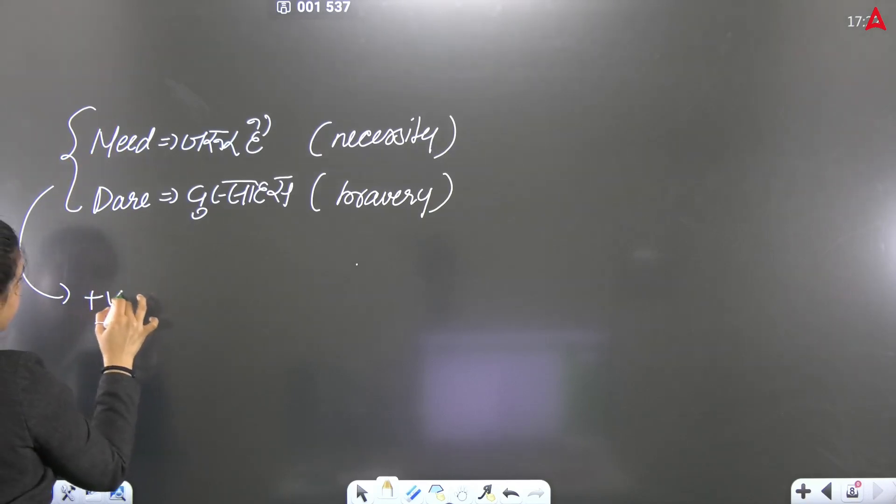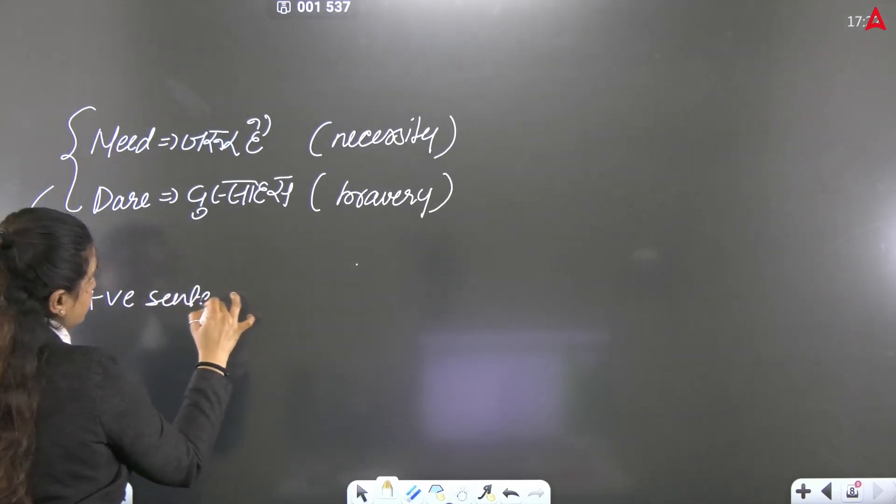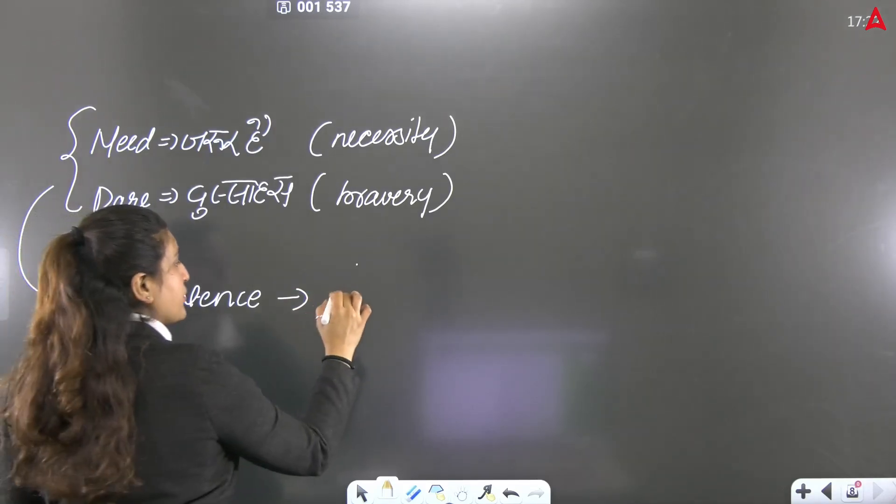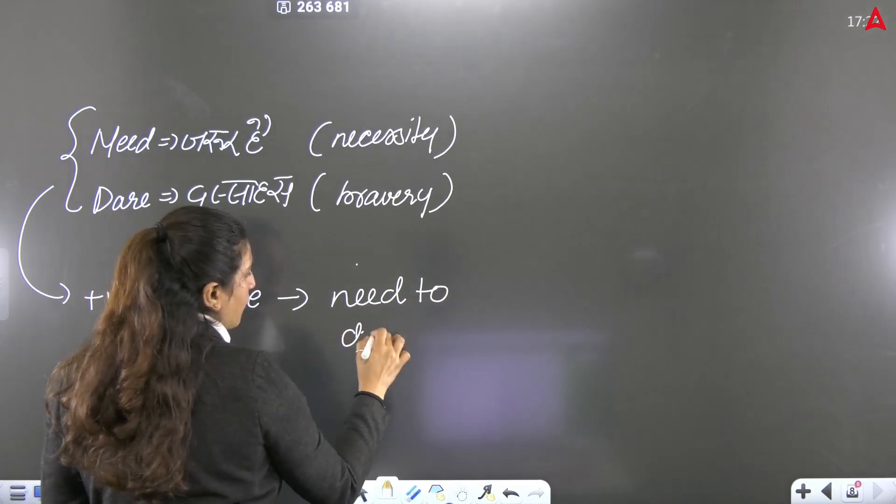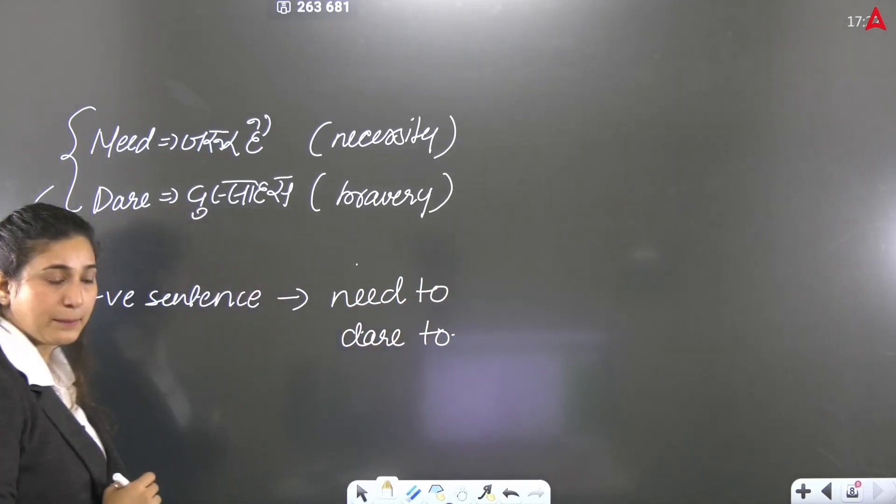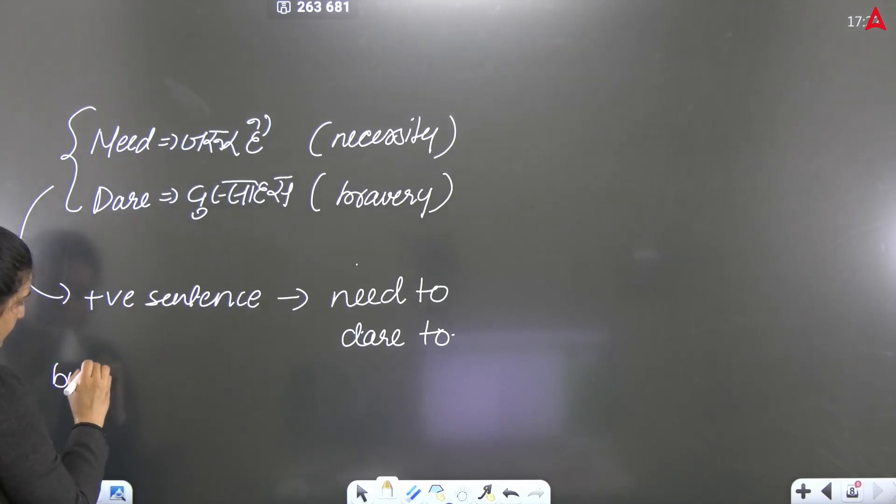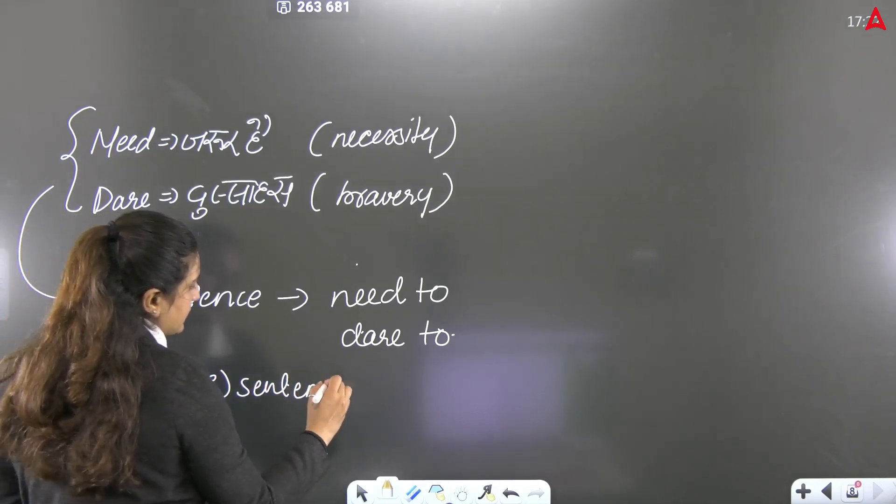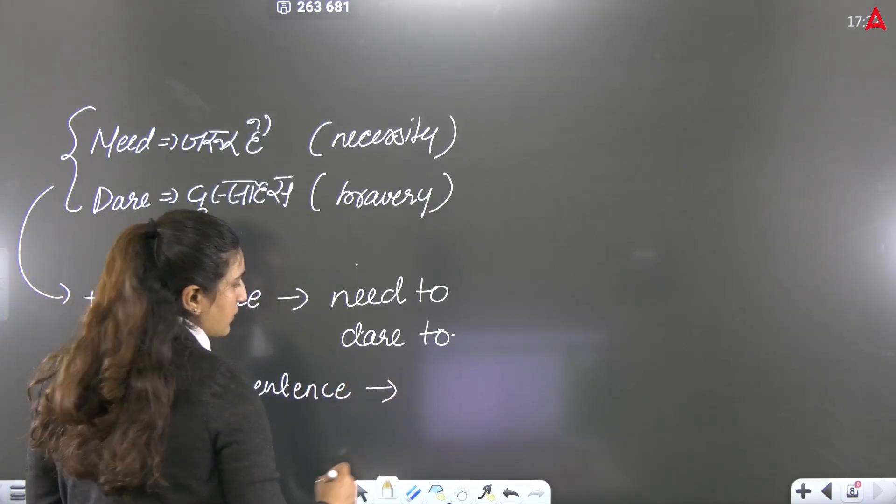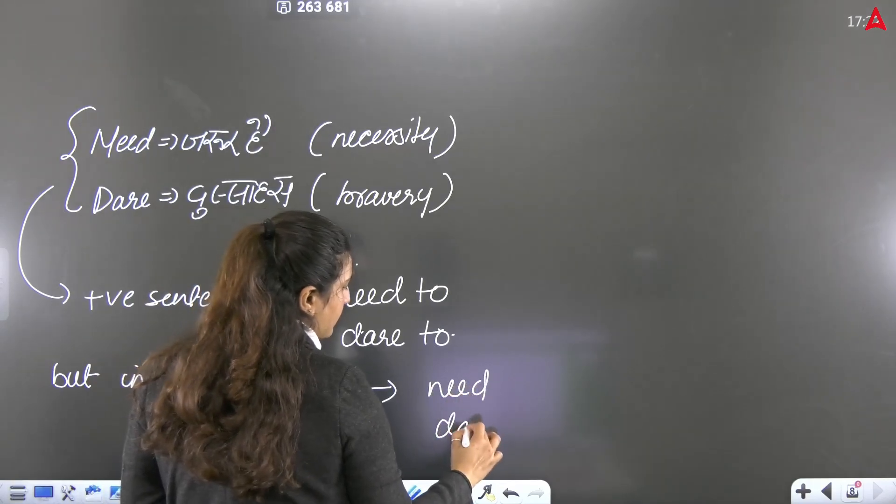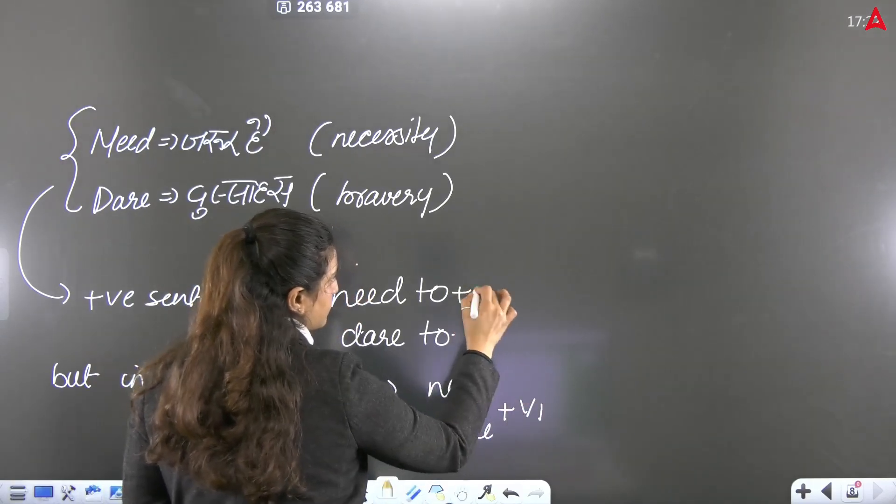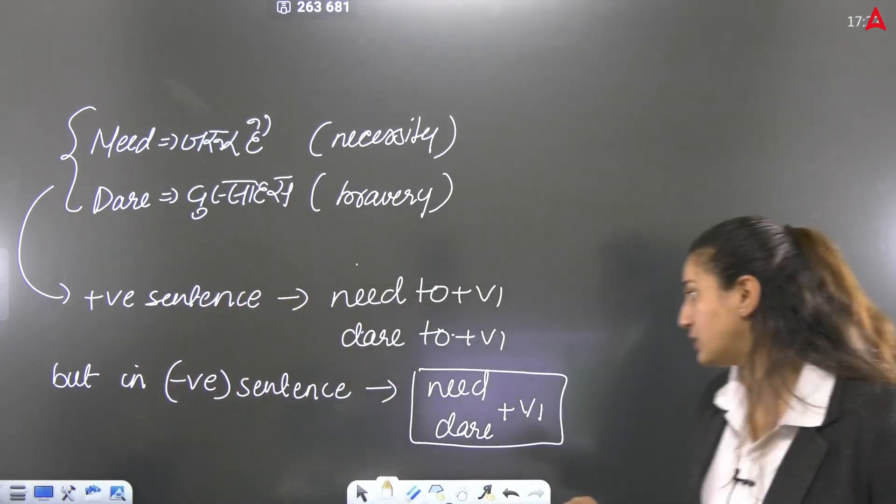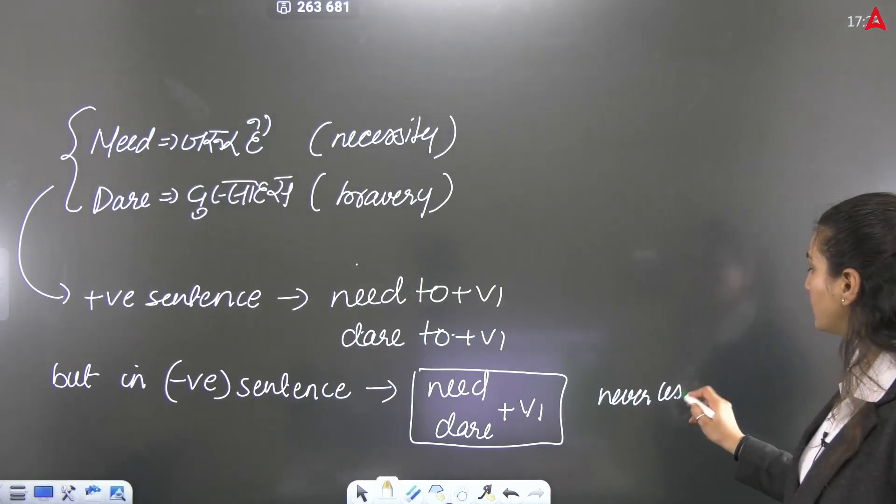One more important thing: when you create a positive sentence, what do you put with need? 'To'. And what do you put with dare? 'To'. But in negative sentences, use need and dare with verb first form, not 'to' plus V1. That means here you will never use 'to'.